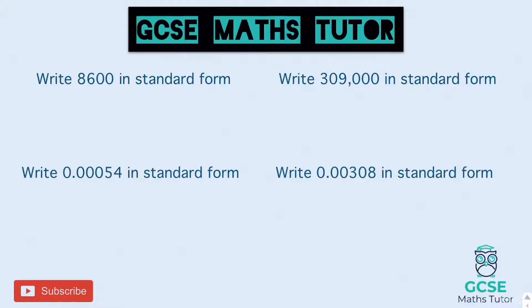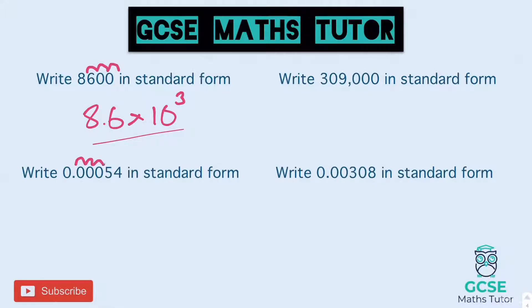Looking at the answers: 8,600 — that's 1, 2, 3 hops, which makes it 8.6 times 10 to the power of 3. The one below is a nought point number so it's a negative power: 1, 2, 3, 4 hops, so that's 5.4 times 10 to the power of negative 4, because it's a nought point number.